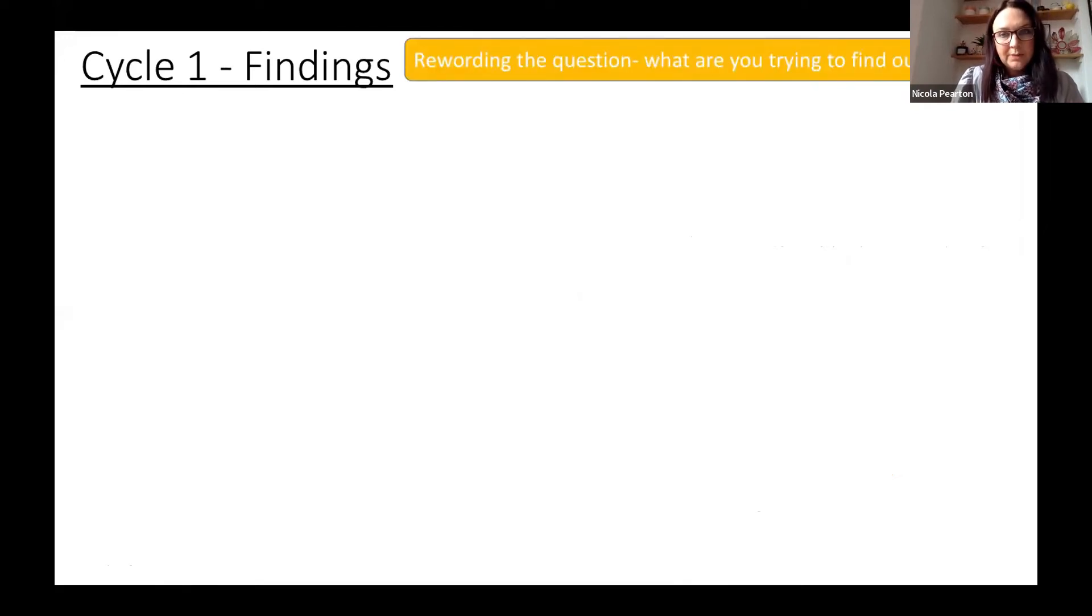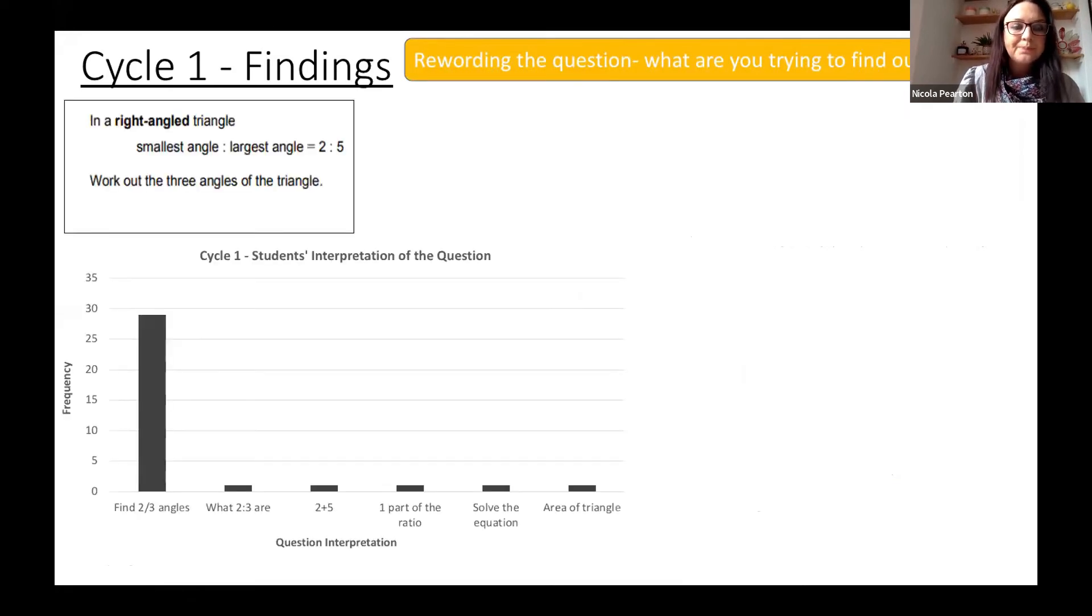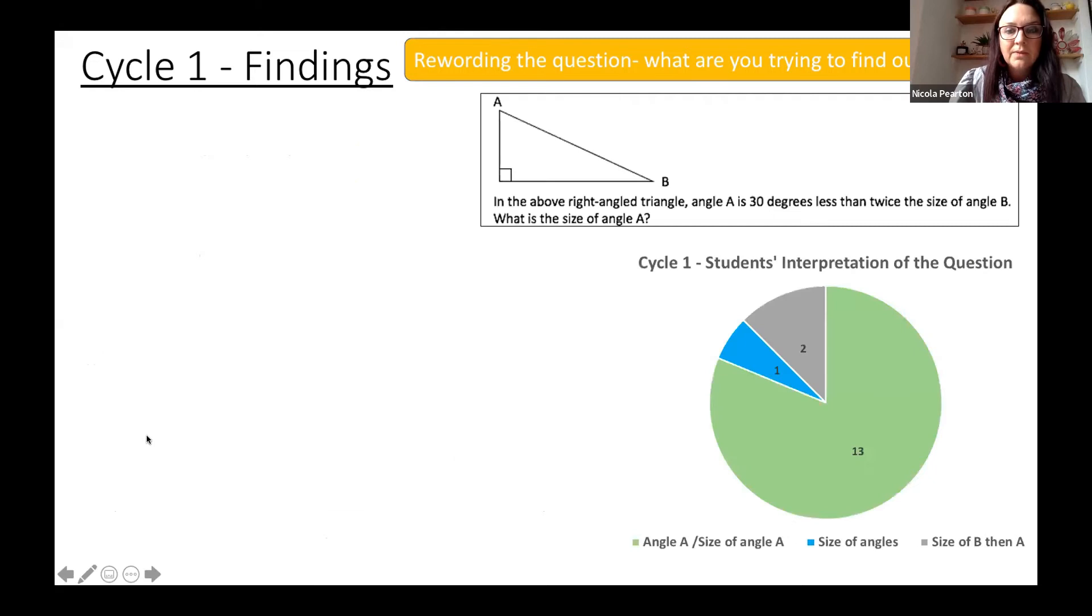We then asked them to reword the question—what they were trying to find out. Students were able to do this quite well on the whole, though this may have been our wording. They did just focus on the main question at the end. Most students said they were trying to find two or three angles. For the Brighton students, they said the size of angle A, but they didn't go into any more depth of, you know, finding B and then finding A or anything like that.